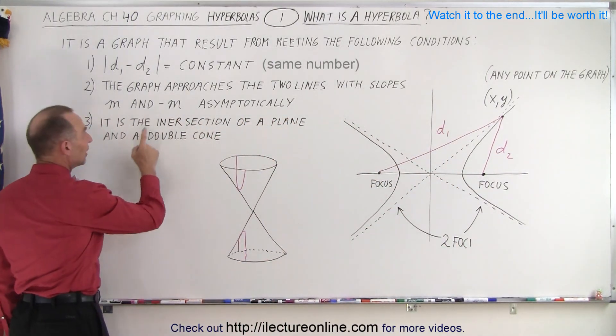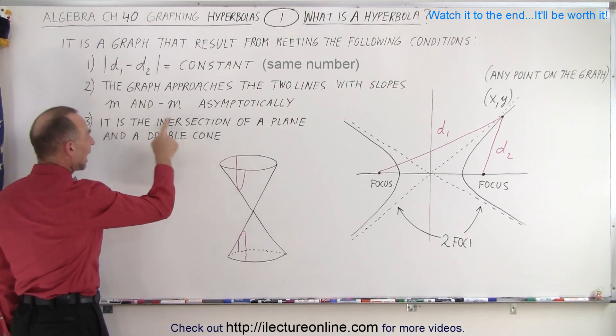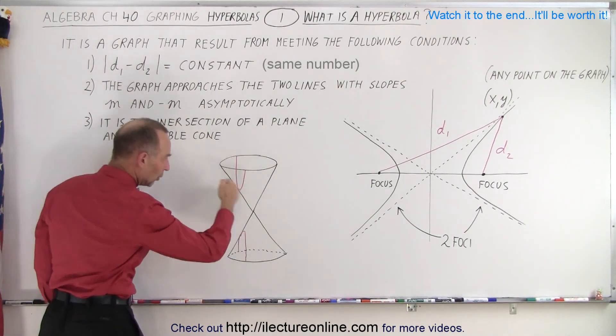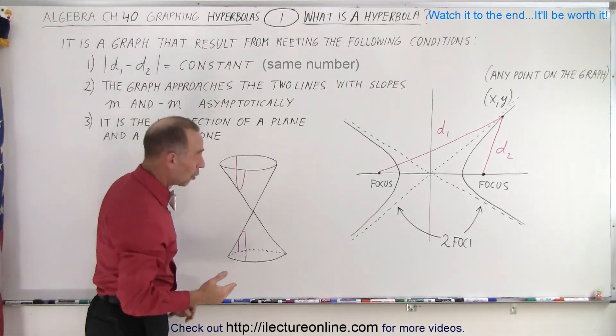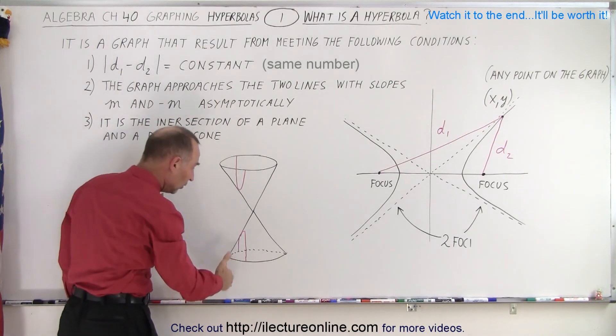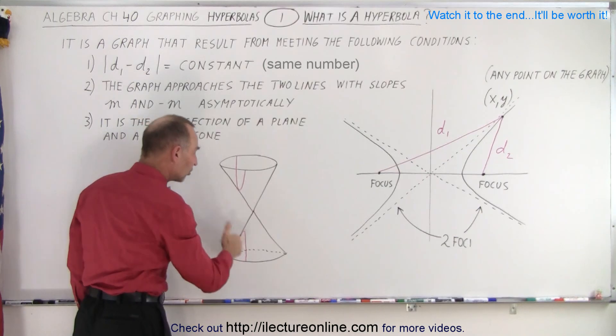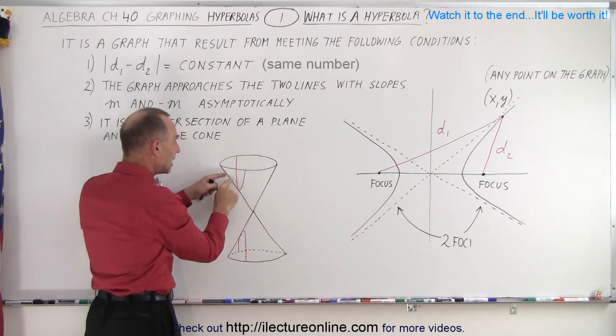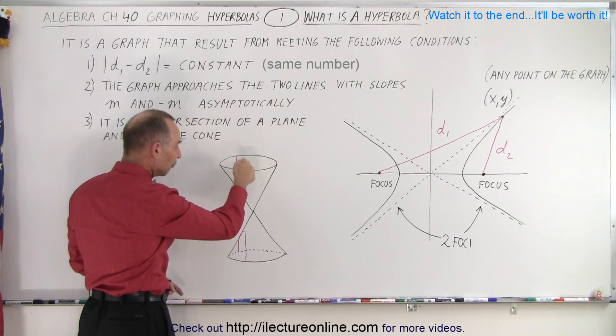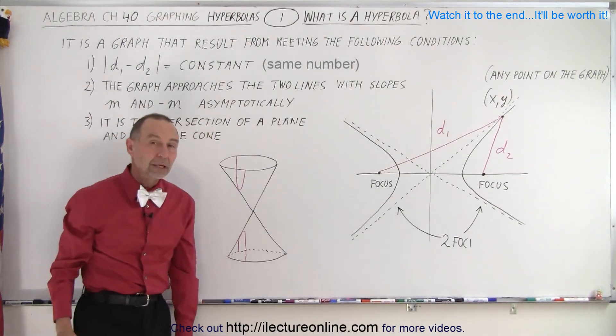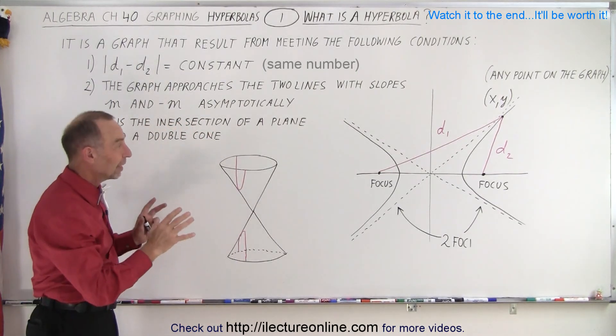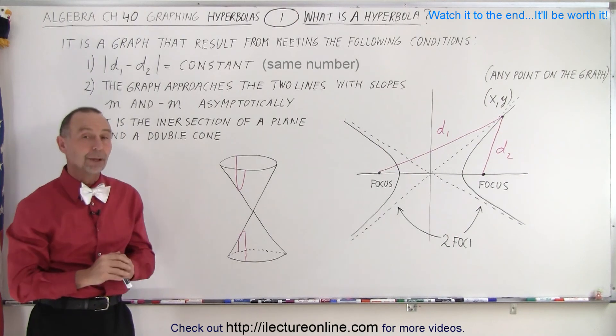And thirdly, it is the intersection of a plane and a double cone. So here's a double cone. It's a double circular cone. And if we then cut it in such a way that we go through both upper and lower section of the double cone, the intersection between the cone and the plane will form a hyperbola. So those are the conditions that are necessary to have a hyperbola.